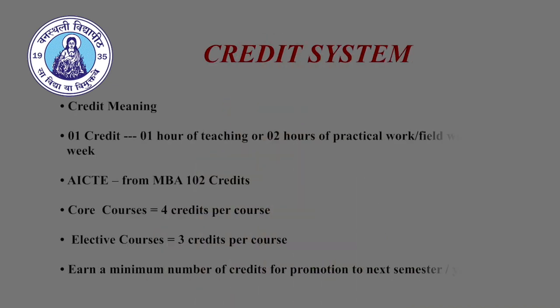Another important component in CBCS is the credit system. A credit means a unit by which a course is measured. It determines the number of hours of instructions required per week for a particular course or subject. One credit is equivalent to one hour of classroom teaching or two hours of practical or field work per week. So if a course has three credits, it means there will be three hours of classroom teaching or six hours of practical work for that course in a week.